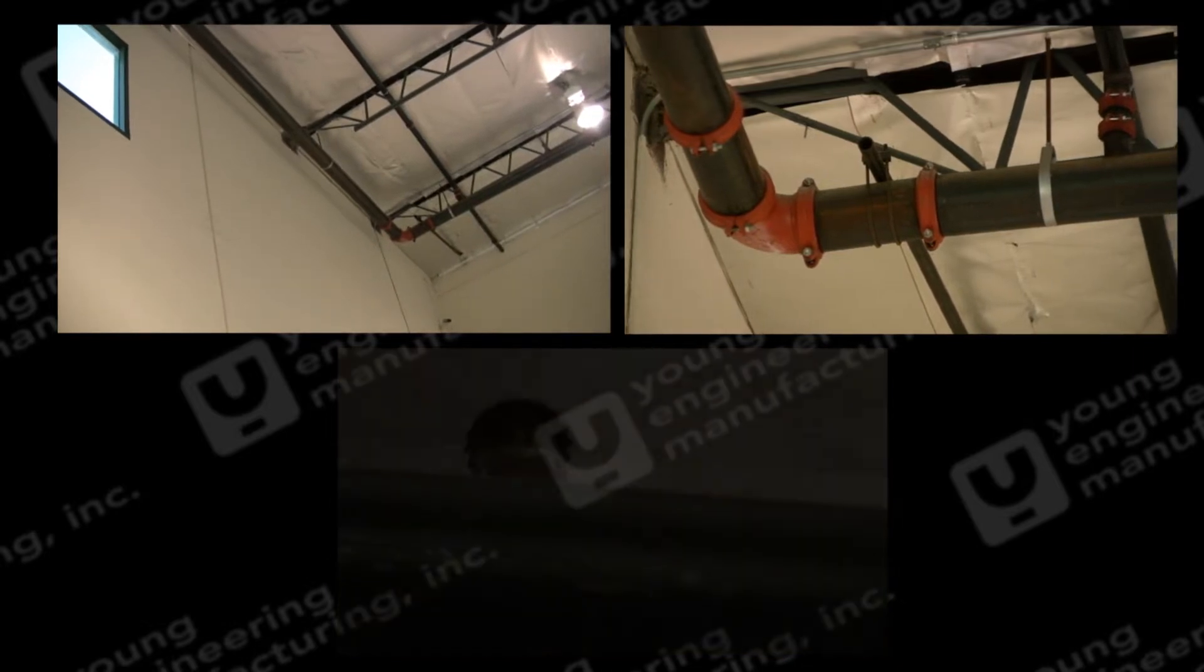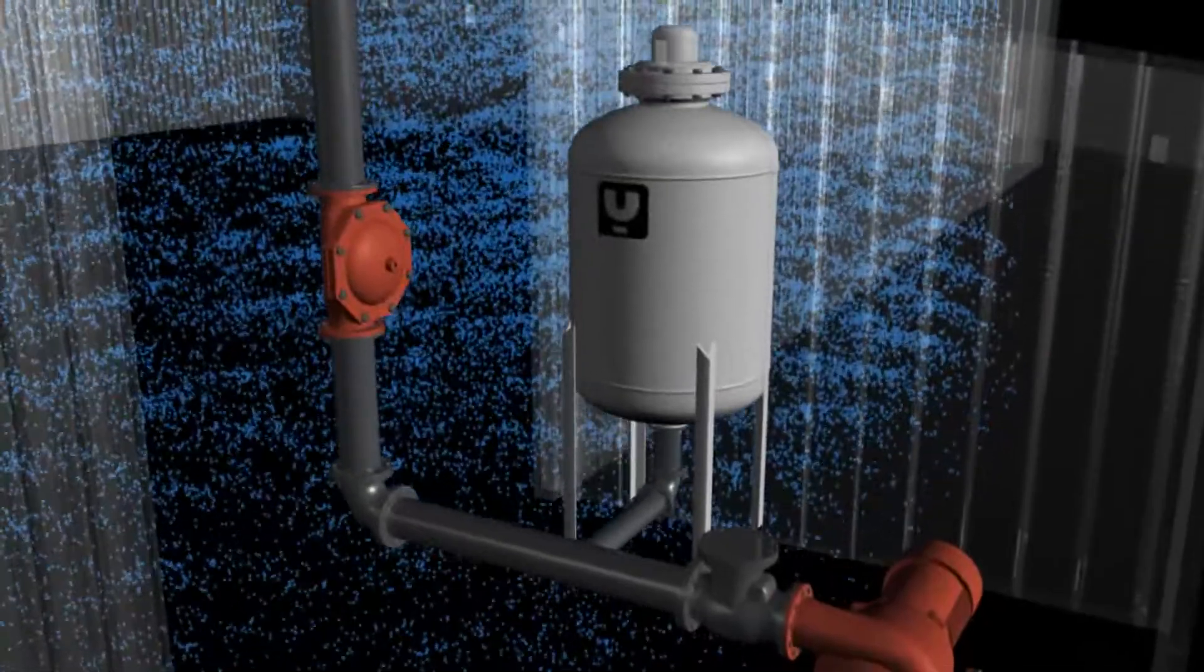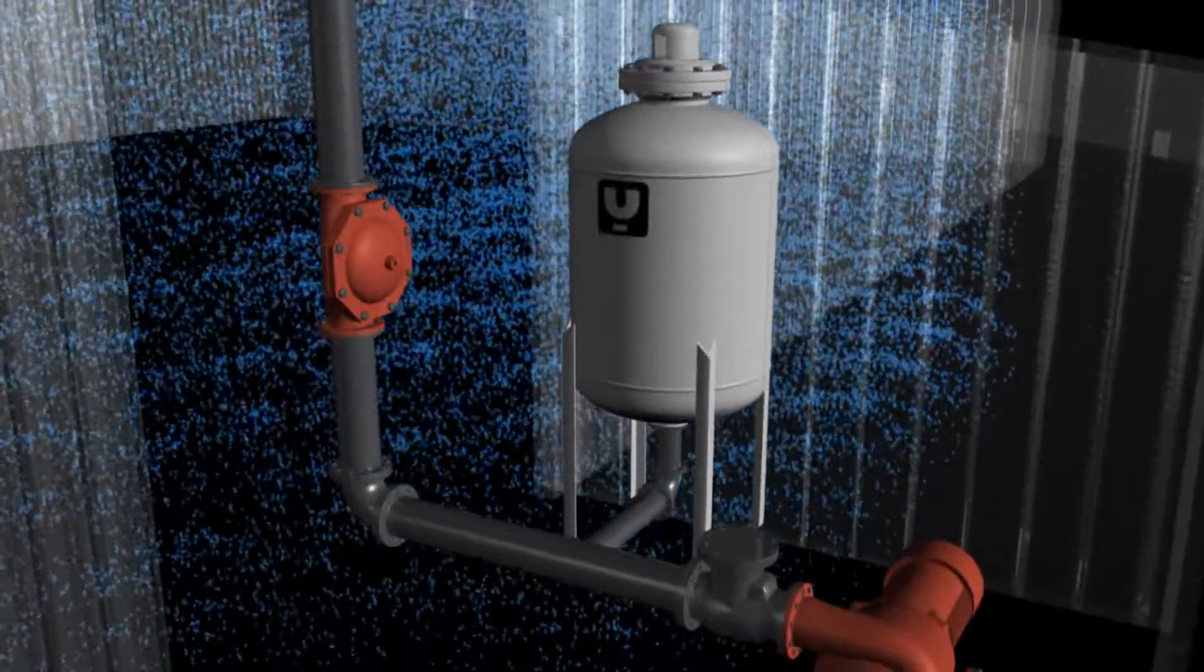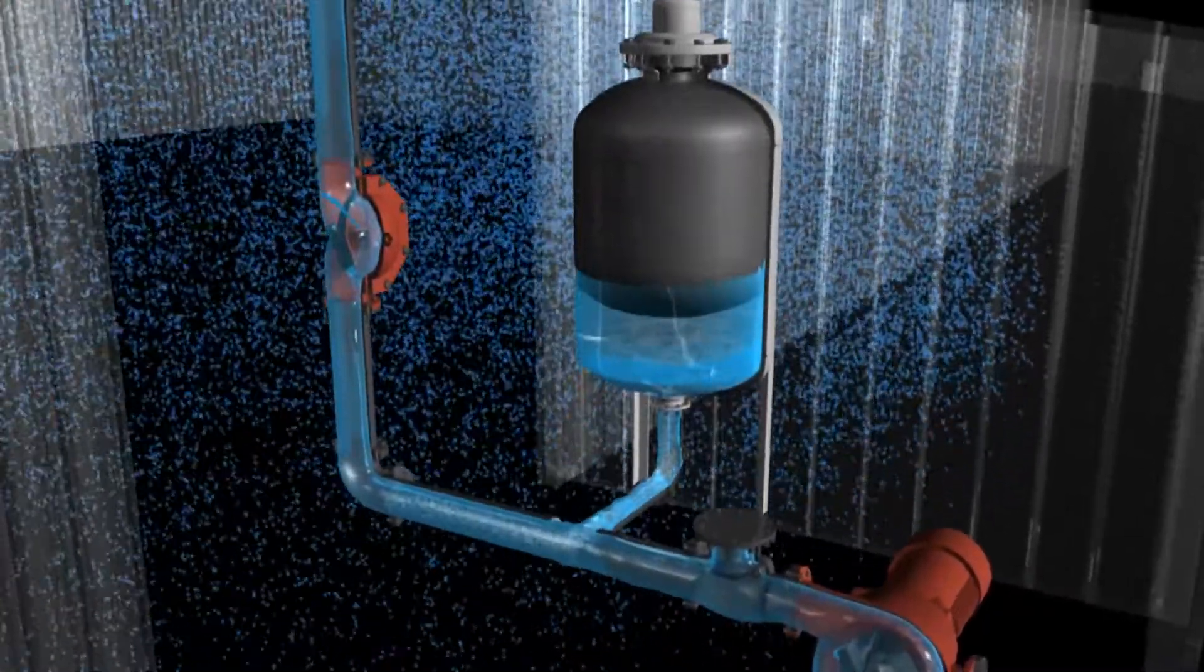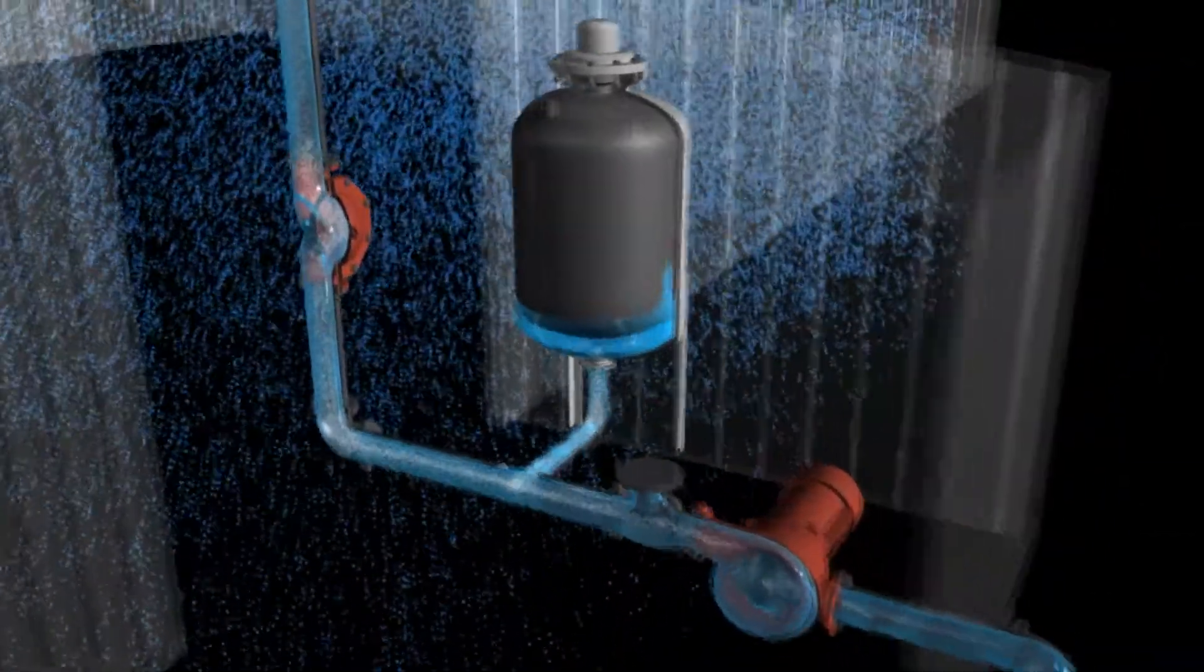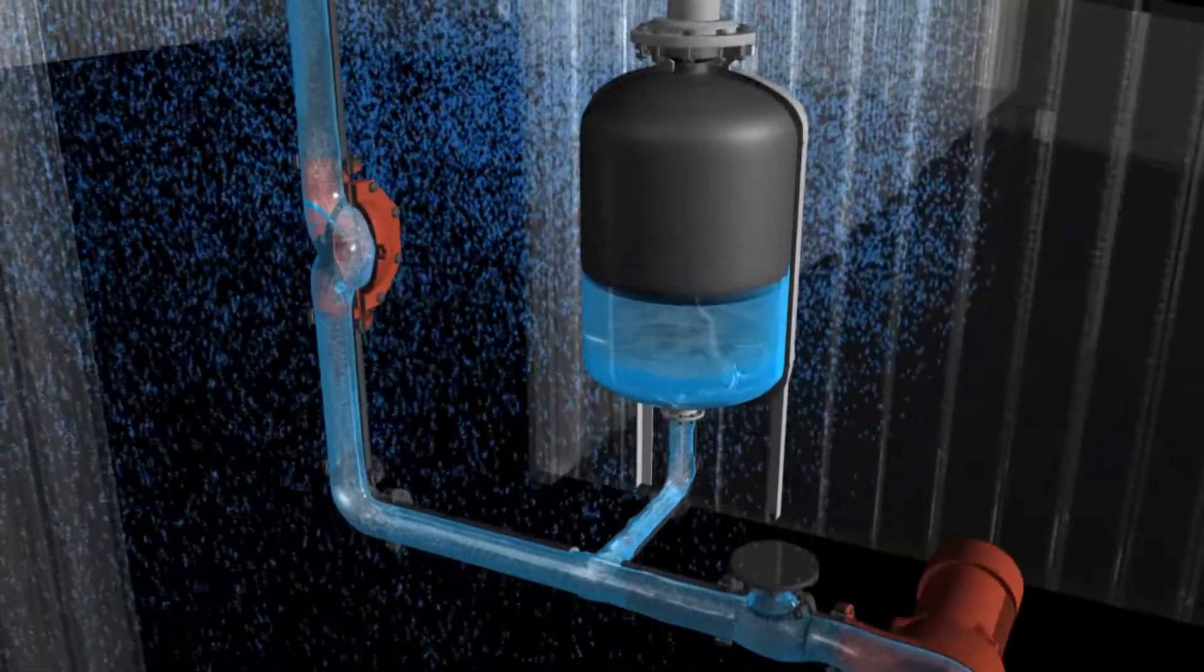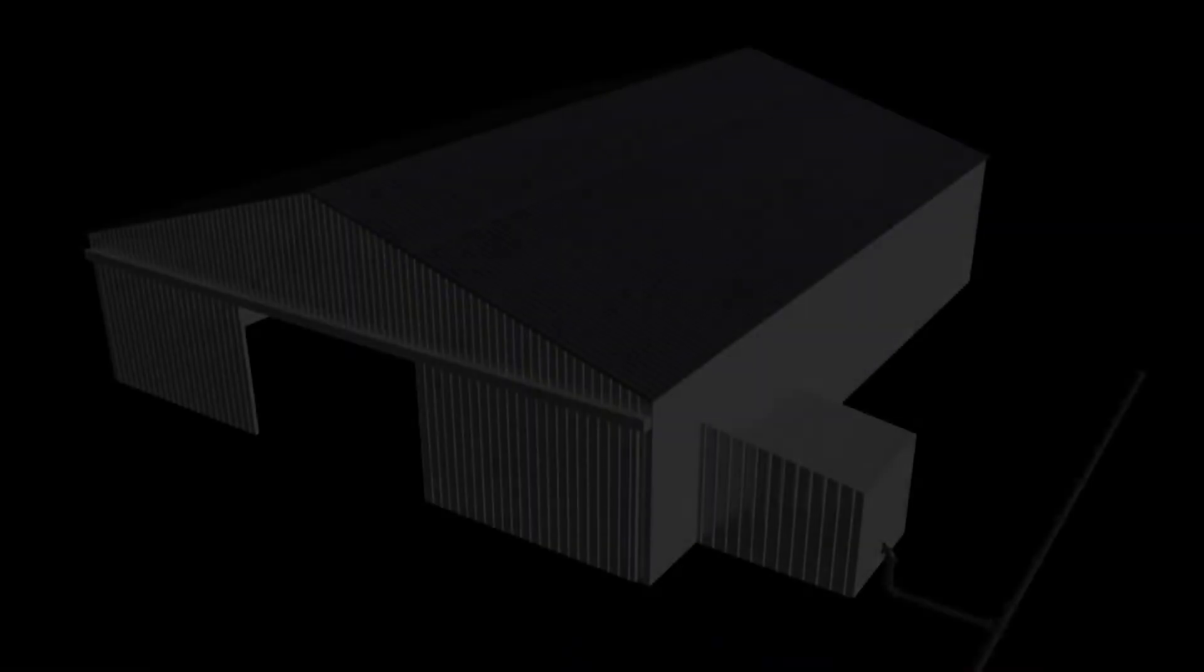After the deluge valve opens, a bladder surge tank is located in the system to provide water into the pipeline, preventing column separation. When the pump starts to provide more pressure, water is directed back into the bladder surge tank to prevent a surge condition from the pump startup.